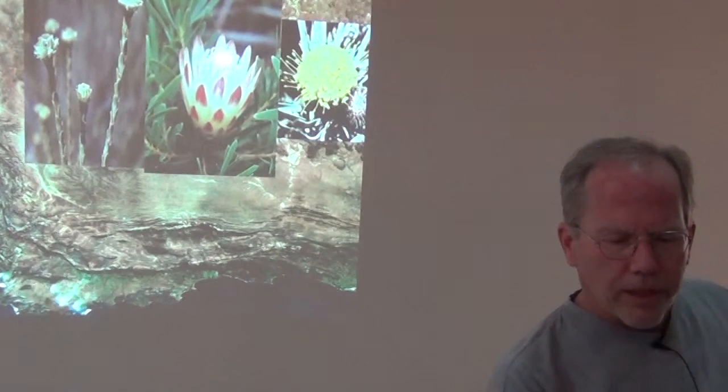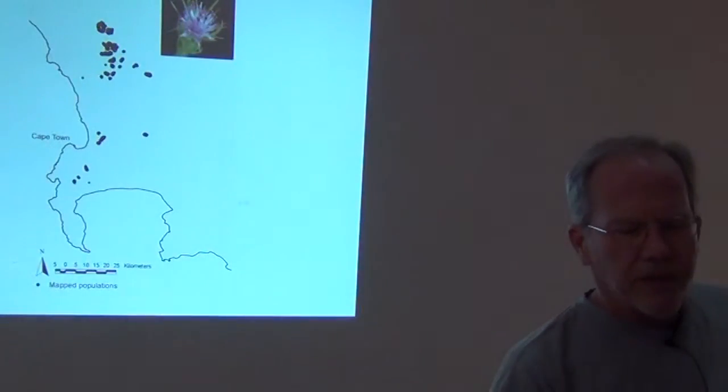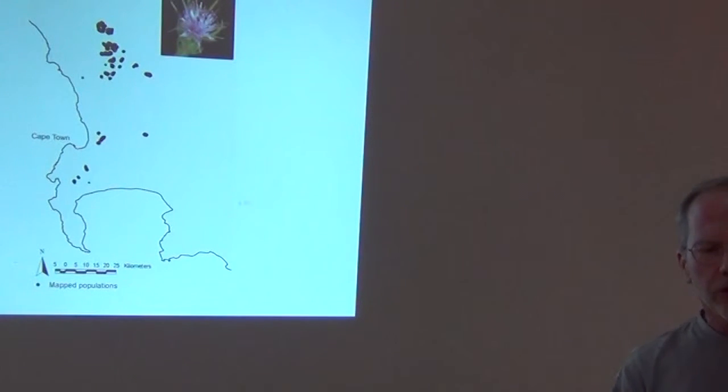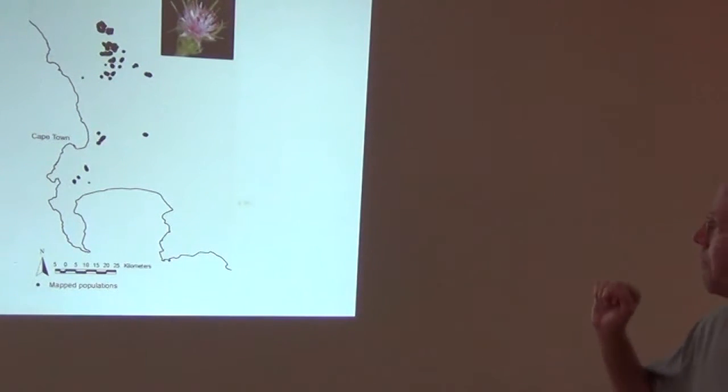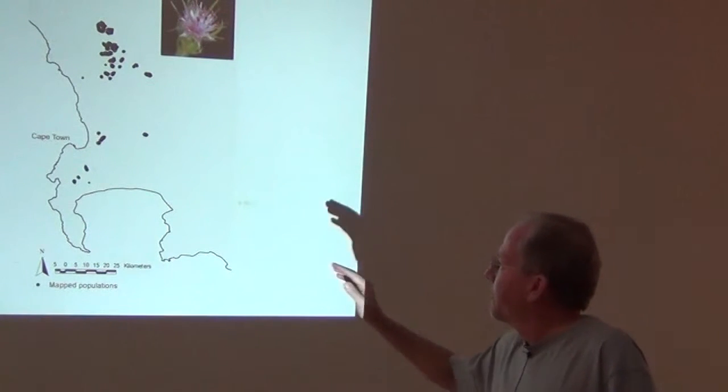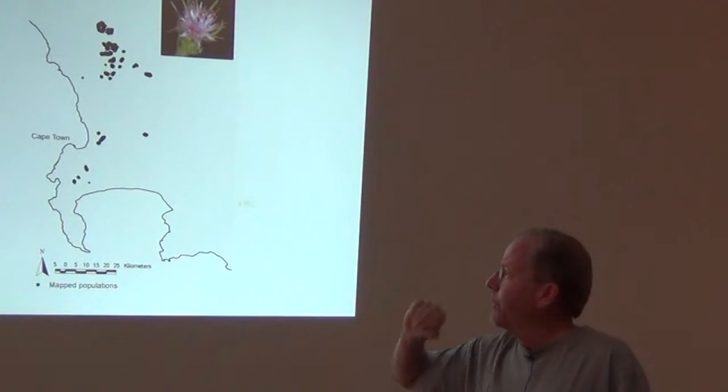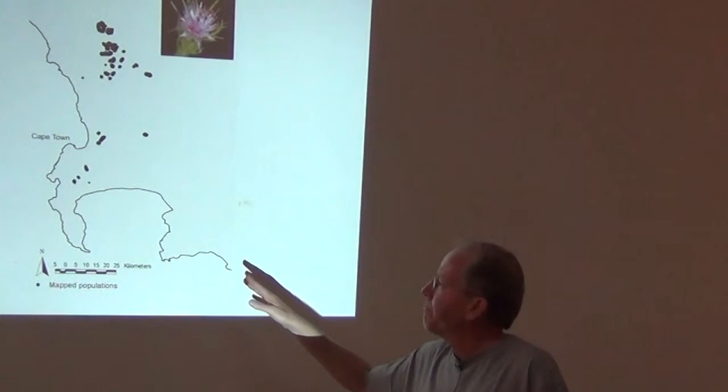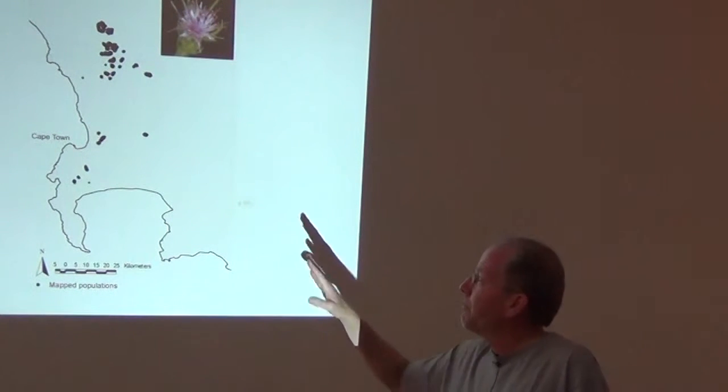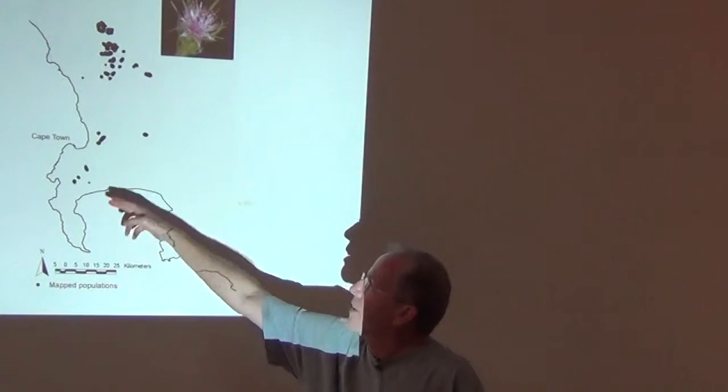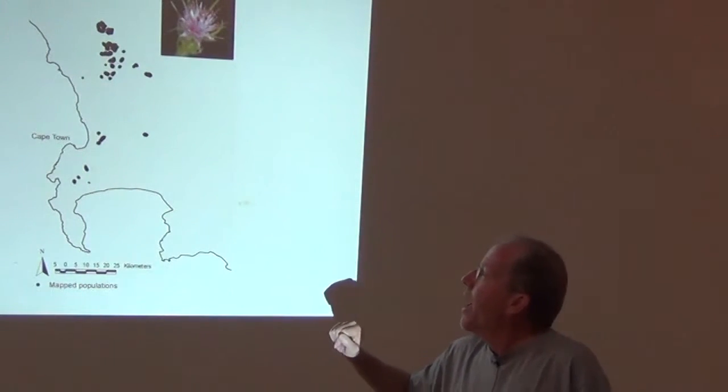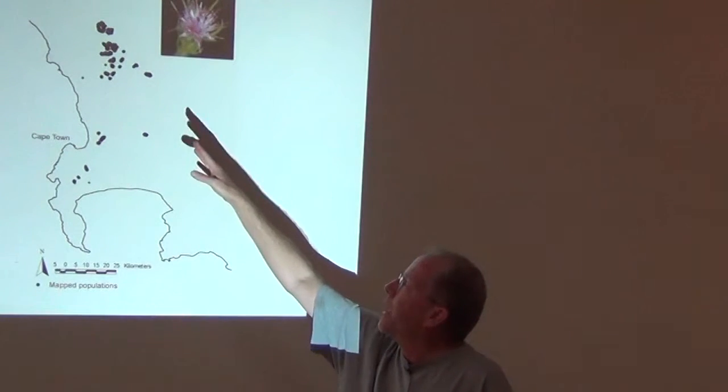So I'm going to show you a little bit about what that looks like. So here's one of the proteas, a diastella. It's got a teeny little pincushion-y flower. And you can see here's a highly schematic version of Cape Town. We just looked at it in the satellite image. I can go back if you want to get oriented. But if you remember when I pointed out Cape Town, there's this little hook of land. Cape Point is here. And this is just the coastline around Cape Town.